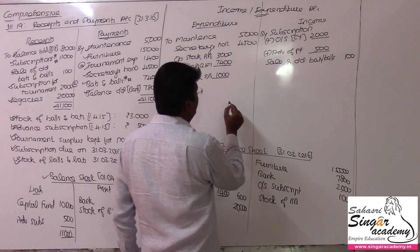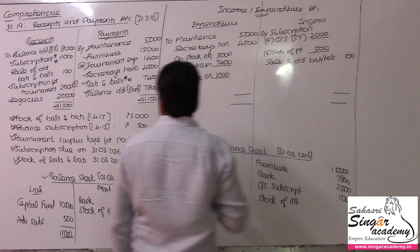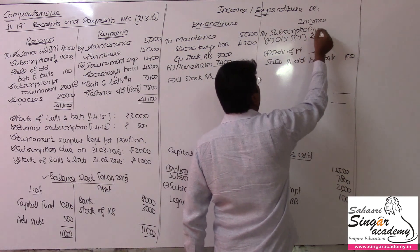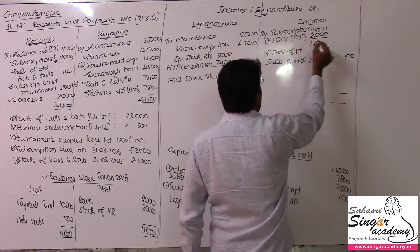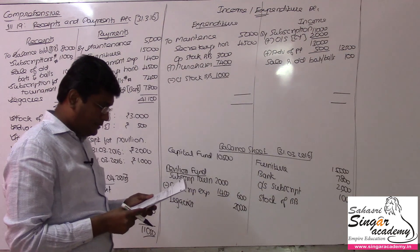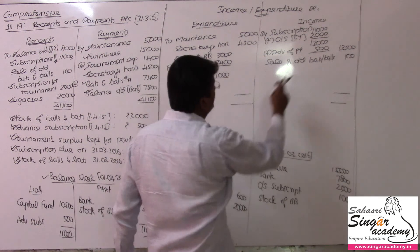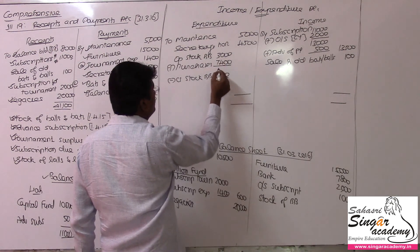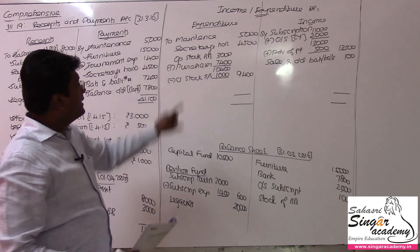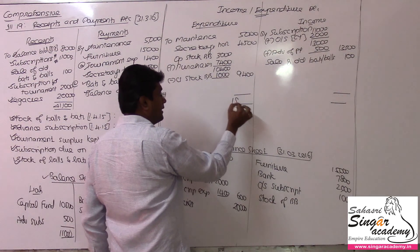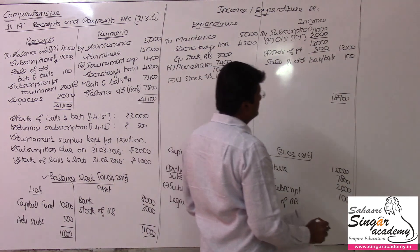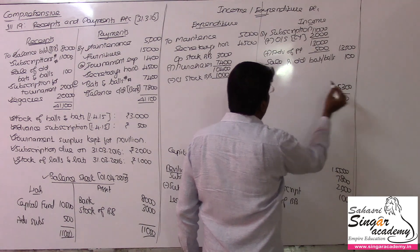Income and expenditure: subscription is 11,000. Add outstanding of current year: 11,000 plus 2,000 equals 13,000. Overall subscription should be 13,500. Bats and balls: 3,000 plus 7,400 equals 10,400, minus closing stock 1,000 equals 9,400. Total expenditure comes to 18,900 — there is a deficit in this illustration.